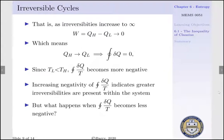As irreversibilities within our system increase toward infinity, our work — expressed as QH minus QL — tends toward zero, which means QH tends to QL, and the cyclic integral of delta Q approaches zero. Since TL is always less than TH, the cyclic integral of delta Q per T becomes more negative as irreversibilities increase. Increasing the negativity of this cyclic integral indicates greater irreversibilities within our system.